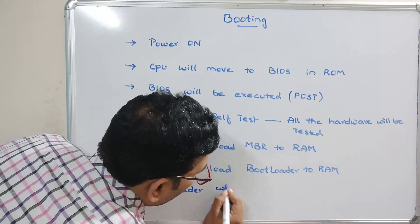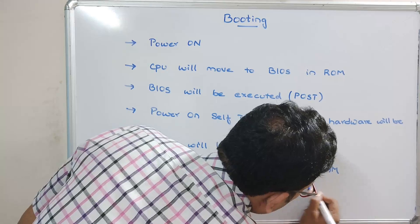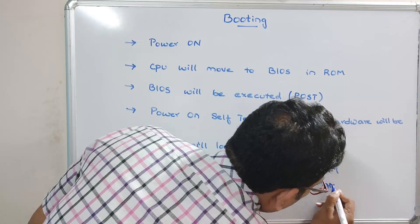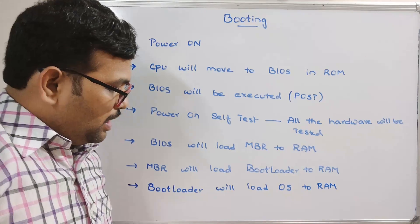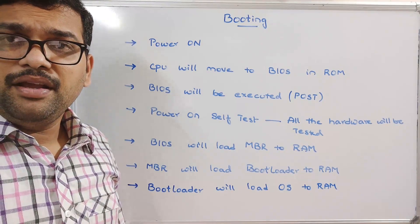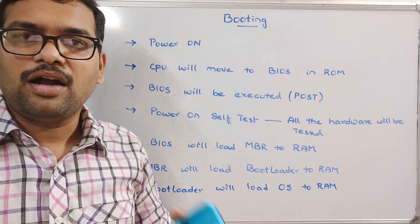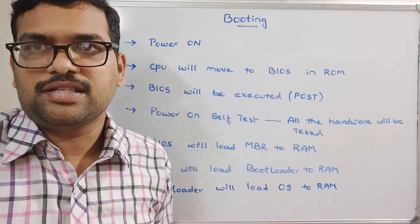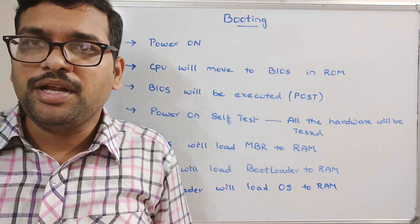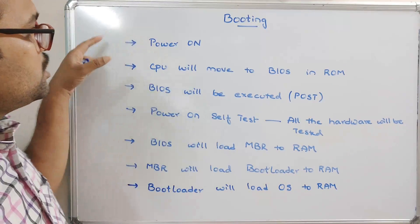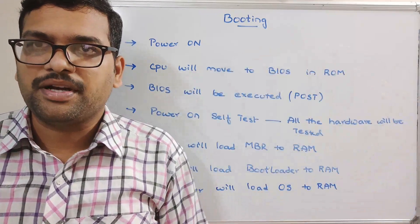The boot loader will then load the operating system into RAM. Whatever the operating system may be — Windows or Linux — it will be loaded into RAM, and automatically control will move to the operating system. This is how the system is powered on and control is handed to the OS.